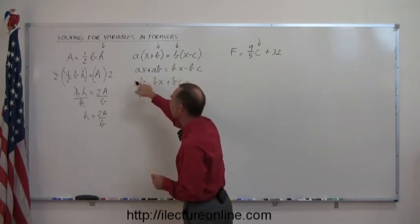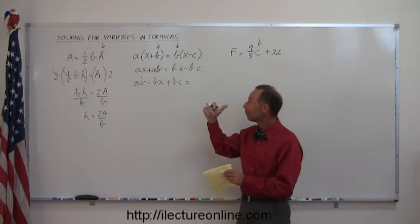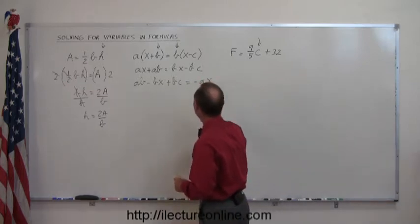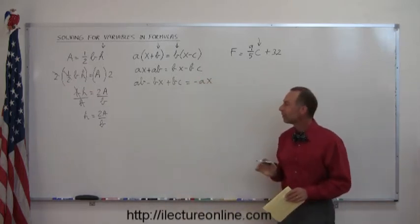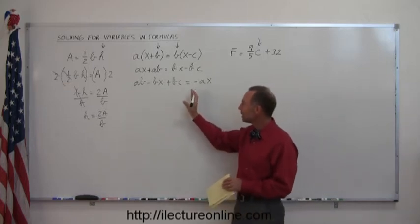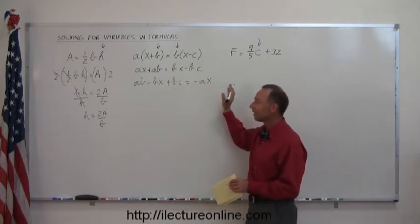We have the AX on the left side, does not have a B in it, that moves to the right side, becomes a minus AX. At least now at this point we have all the terms that have a B in it on the left side, and everything else to the right.